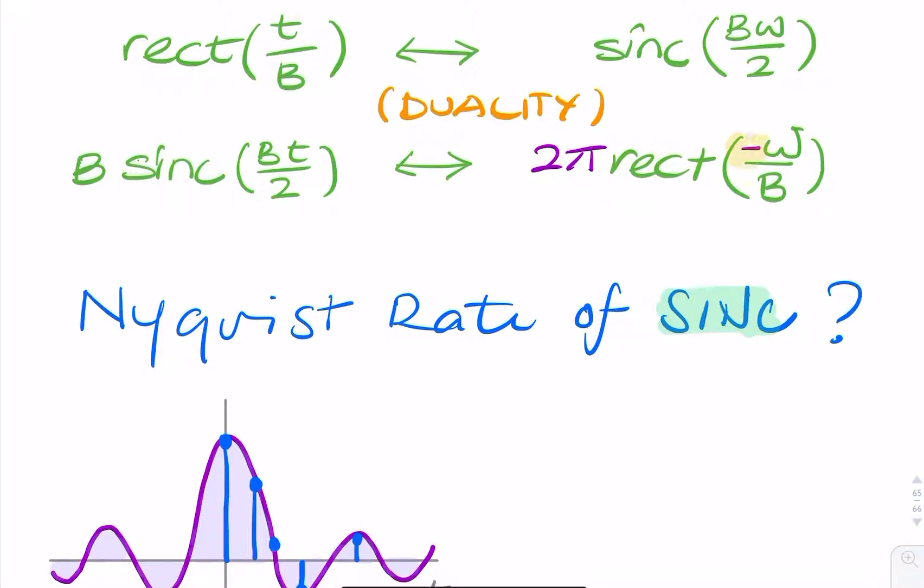Notice that we have a minus sign here, which doesn't really matter because the RECT function is even. And we have a 2π here, which again doesn't really affect our question here.